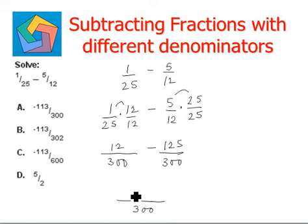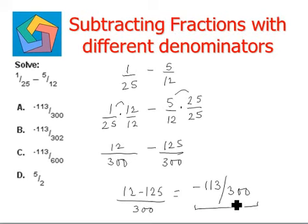On the numerator we have 12 minus 125, which is equal to negative 113 by 300. So this is the final answer, which cannot be reduced further. So we stay here as it is, and option A is the correct answer.